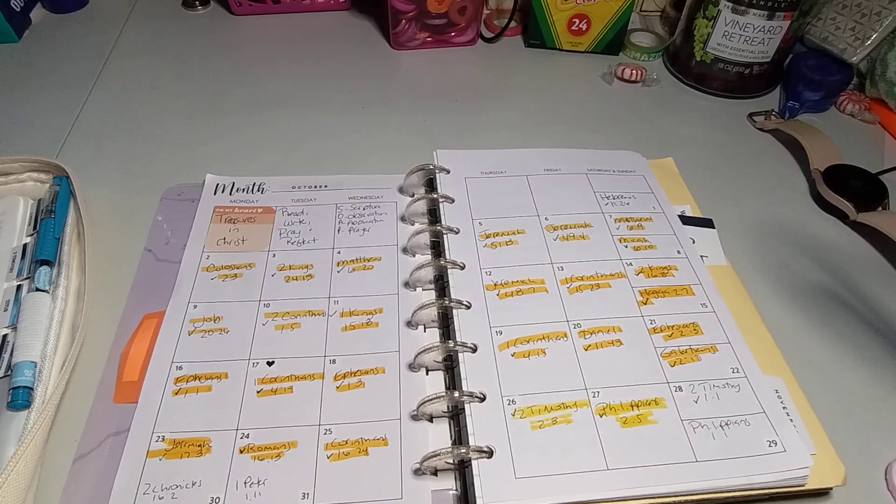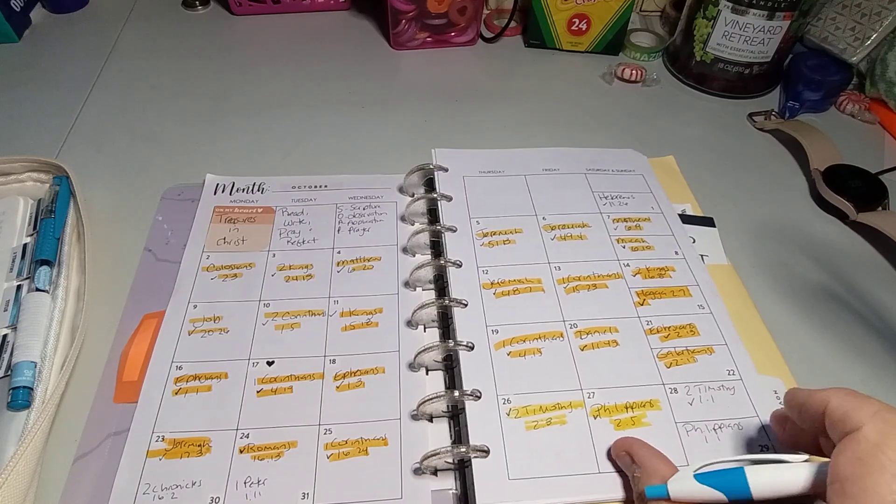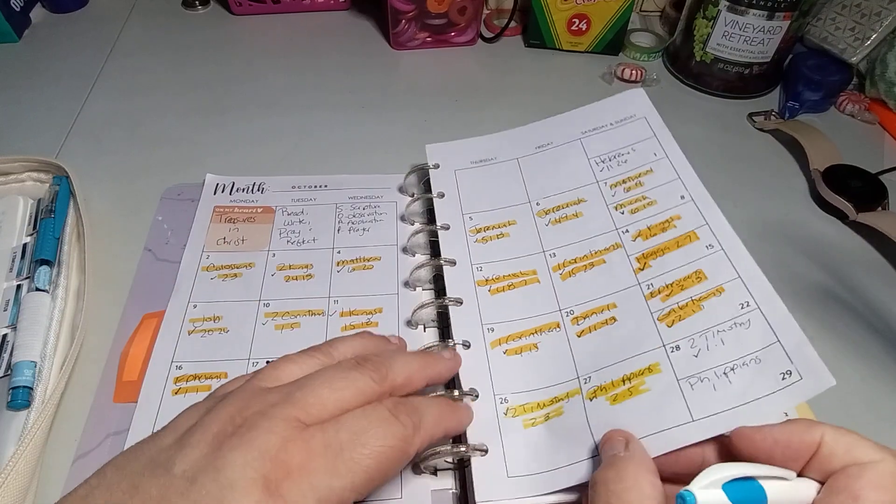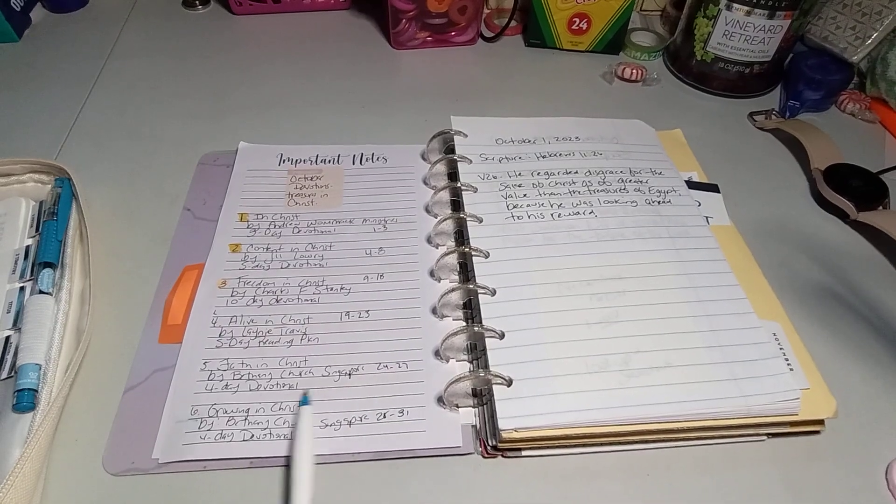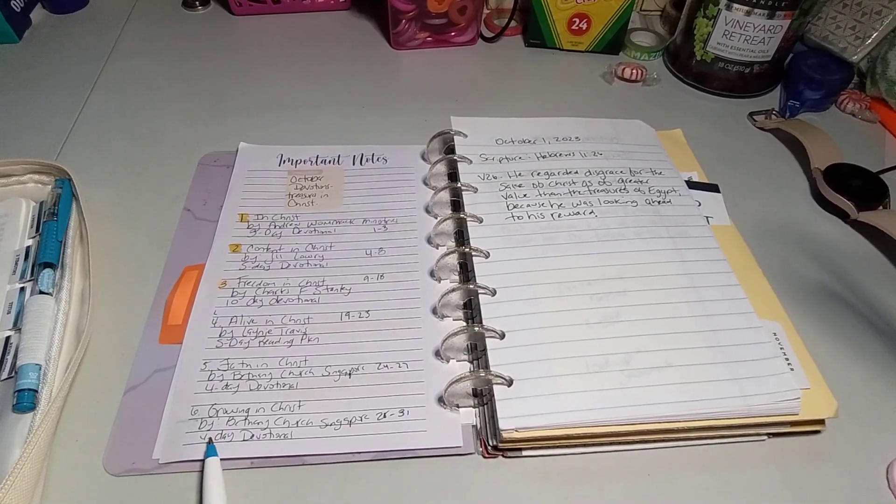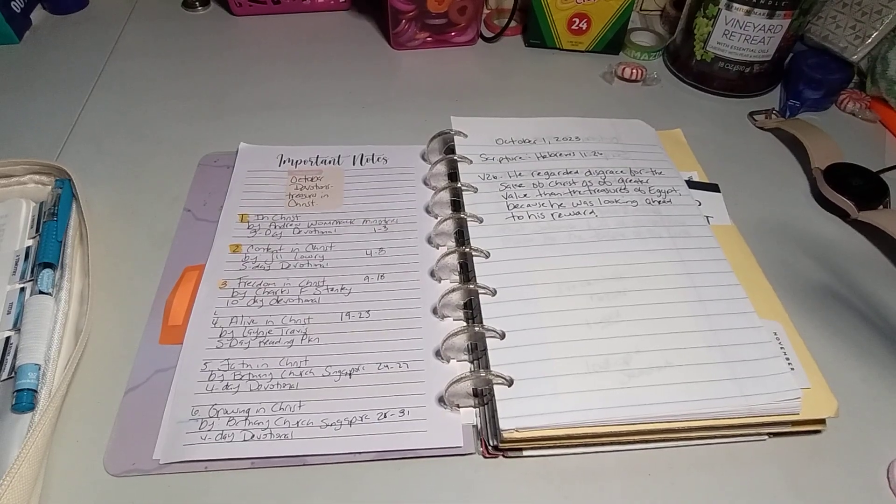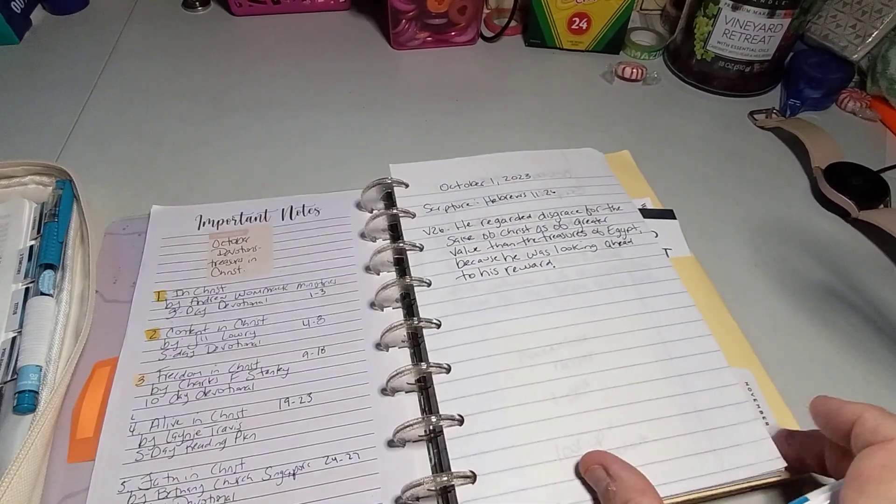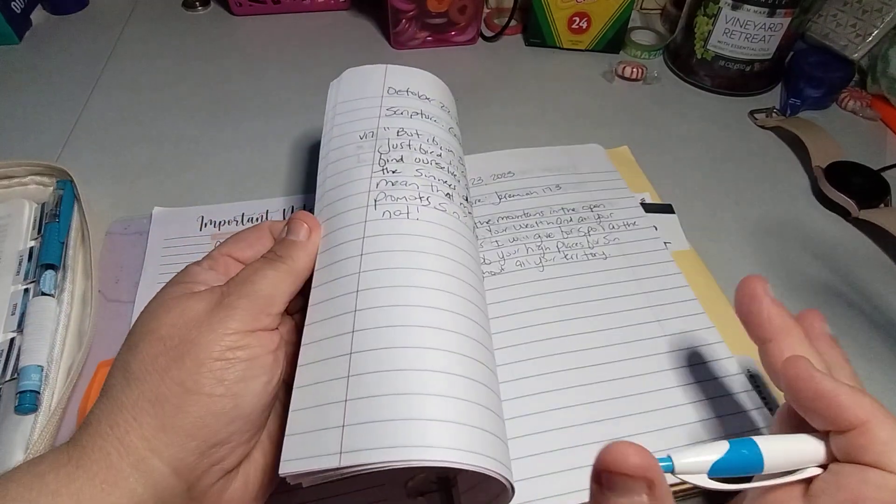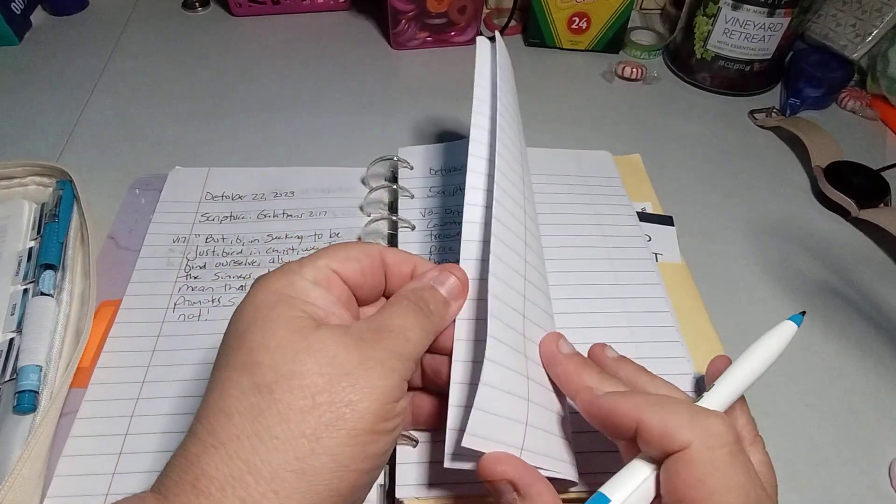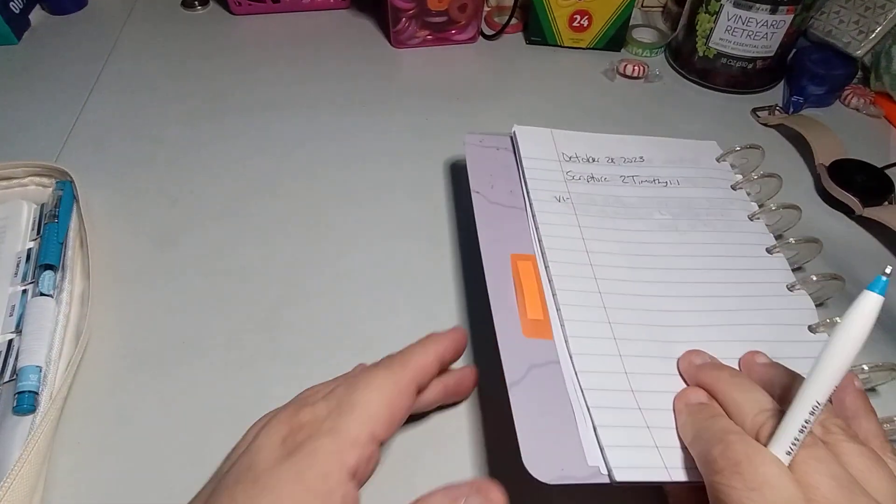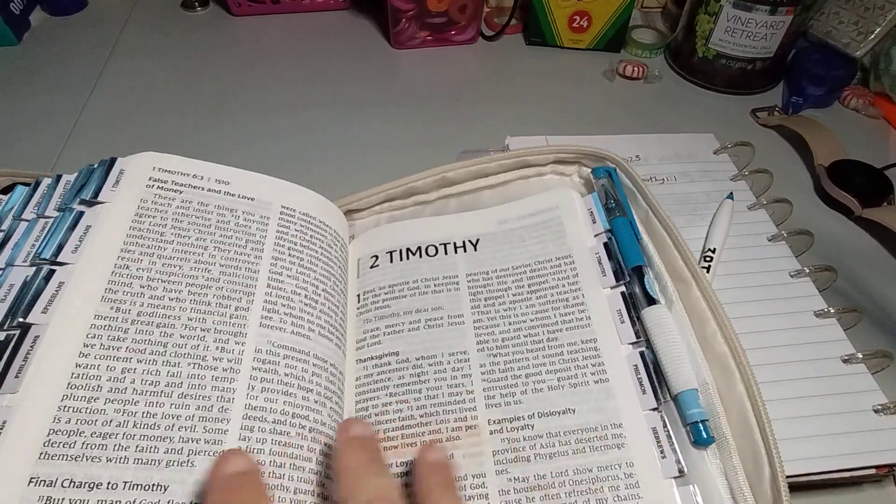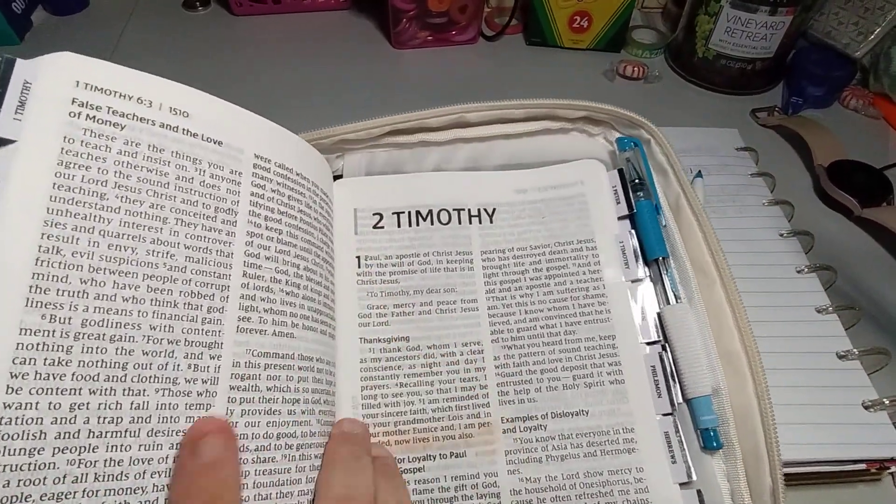So it's the 28th and we are on Faith in Christ. Growing in Christ by Bethany Church Singapore. It's a four day devotional that'll take us to 31. So let's go ahead and read. Let's see. 27, 28th. And again, 2 Timothy 1:1. So we have that here. It is the first line to Timothy 1:1.